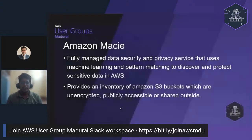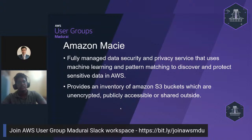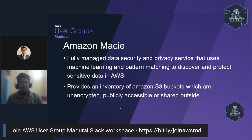Amazon Macie is a fully managed data security and privacy service that uses machine learning and pattern matching to discover and protect sensitive data in AWS. It identifies abnormal activity in your application and provides an inventory of Amazon S3 buckets that are unencrypted, publicly accessed, or shared outside your organization.